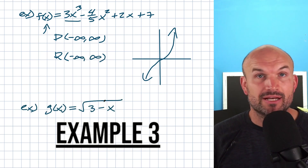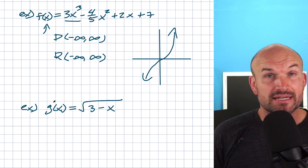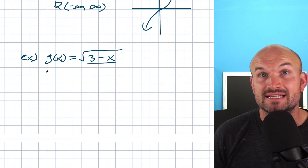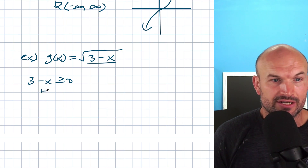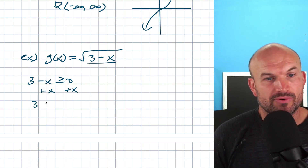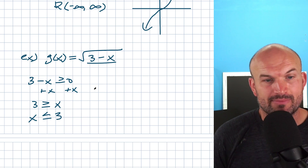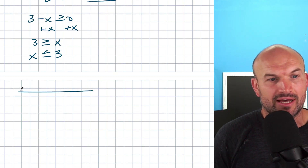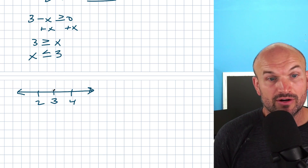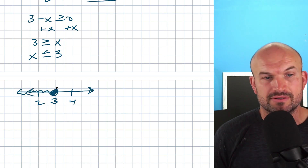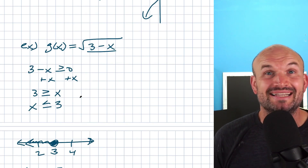Now let's look at g(x) = √(3 − x). Let's pretend we don't know what this graph looks like and go through the process. To find the domain, we do not want our radicand to be less than zero, because we cannot take the square root of a negative number. So we set 3 − x ≥ 0. Adding x to both sides gives 3 ≥ x, or x ≤ 3. So the domain is all values less than or equal to 3, which on a number line is negative infinity to 3, with a closed dot at 3.